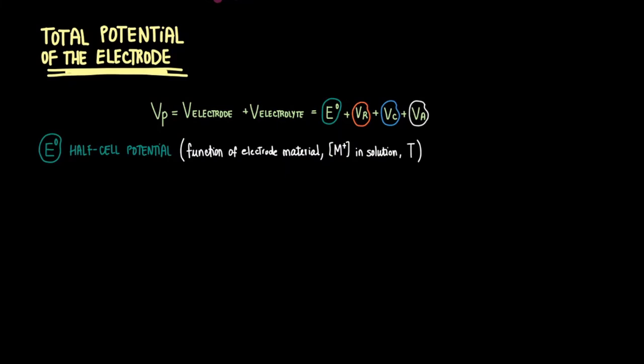The half cell potential is a function of the electrode material, the concentration of metal cations in solution in which the electrode is immersed, and the temperature. In principle, there is another half cell potential at the interface between any two surfaces. Also, for differential biopotential measurements between two identical electrodes, the half cell potentials cancel out, which is great. This half cell potential is also relative to the standard hydrogen electrode.